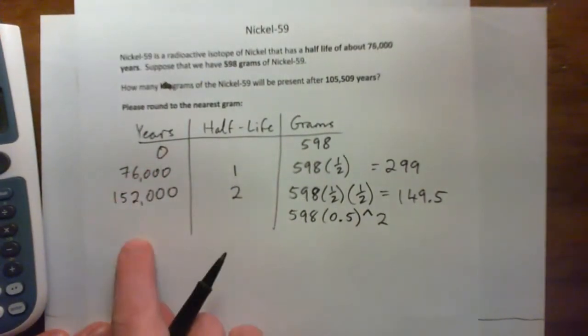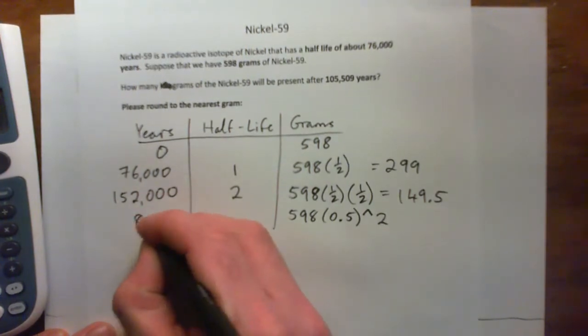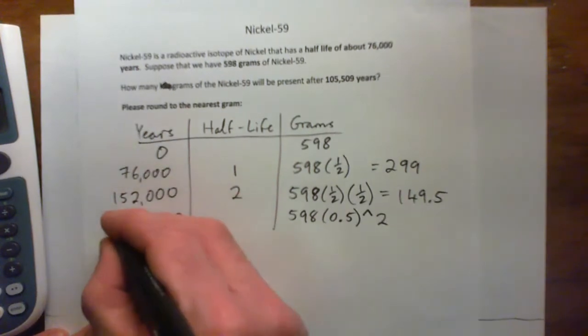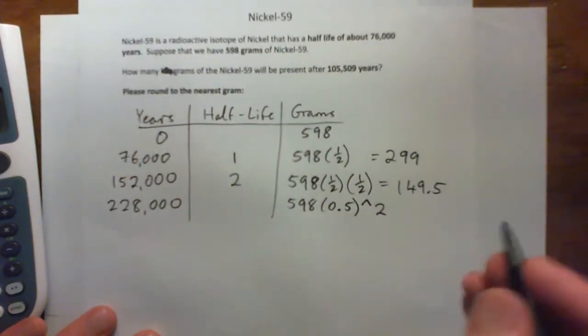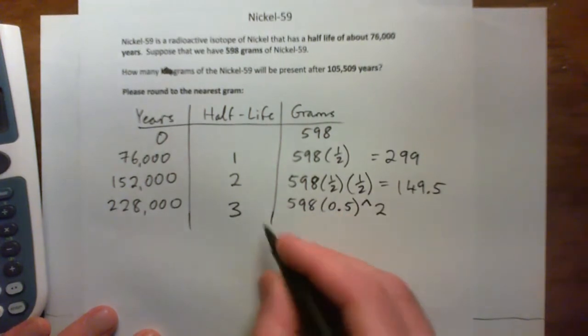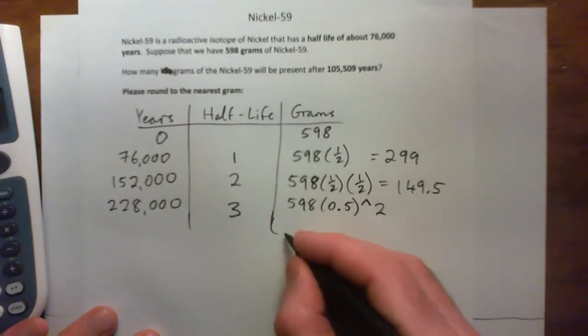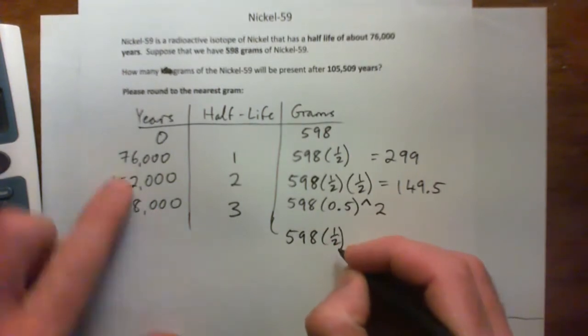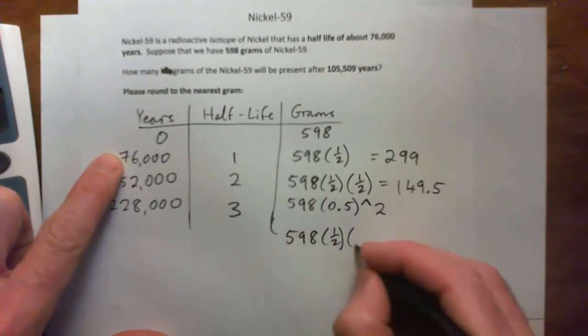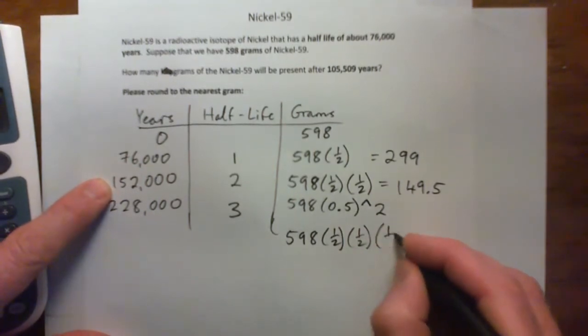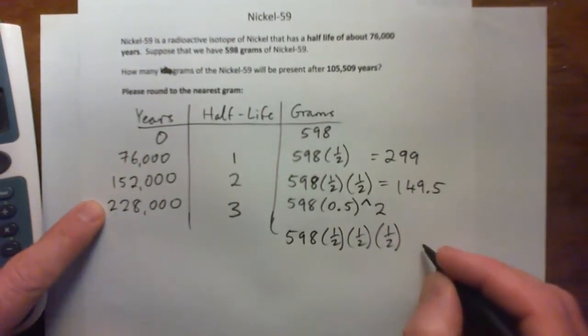And after another 76,000 years, so after 228,000 years, that's three half-lives. So that is 598 times a half after 76,000 years, times another half after 152,000 years, times another half, and that's after 228,000 years.